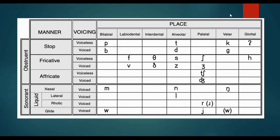To be more specific, it is important to look at this chart. According to place of articulation, the consonants can be classified as bilabial, labiodental, interdental, alveolar, palatal, velar, or glottal. According to voicing, they can be voiceless or voiced. And according to manner of articulation, they can be stop, fricative, affricate, nasal, or glide. If they are stop, fricative, or affricate, they are classified as obstruent sounds.